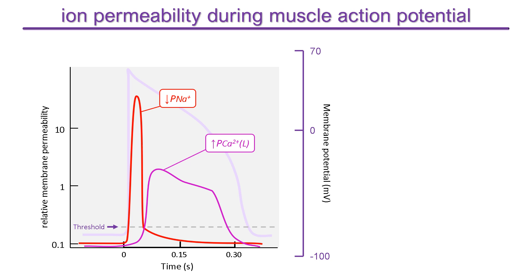A key factor driving the shape of the action potential is the behavior of potassium channels, which is complex. At the resting potential, the membrane is much more permeable to potassium than any other ion, and depolarization caused by sodium influx initially causes it to fall. It remains at a low level for some time before increasing fairly quickly to drive cell repolarization.